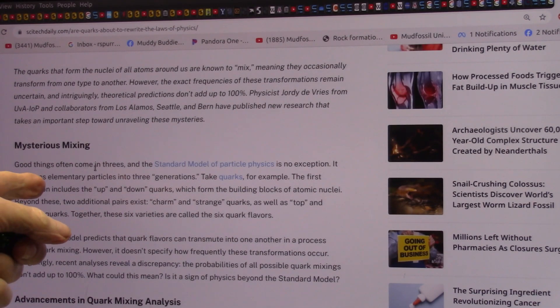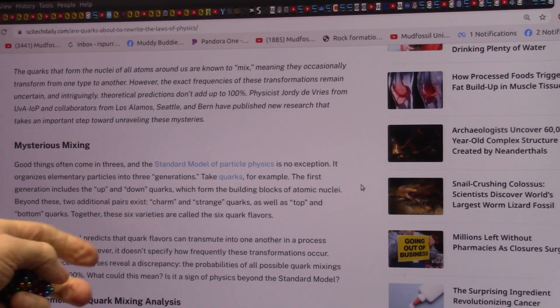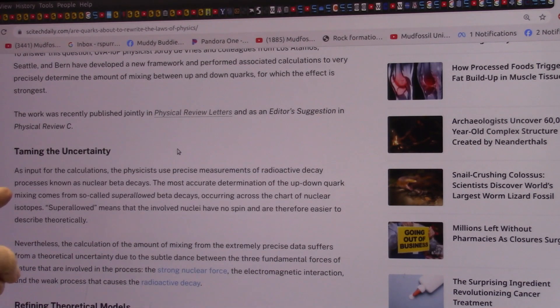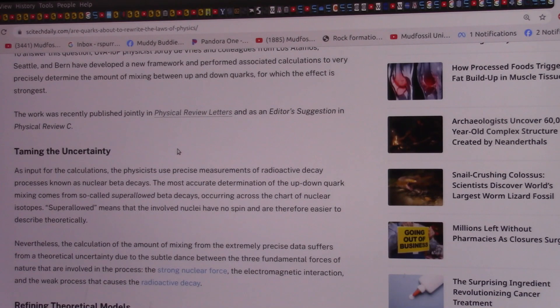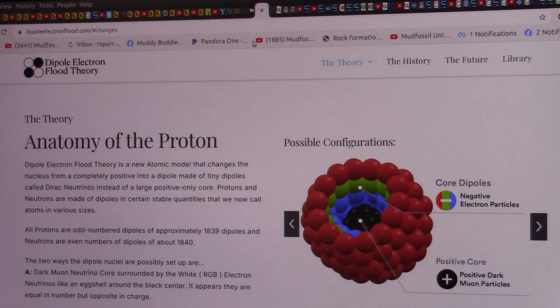All right, the good things often come in three standard model particles with no exception. Organizes element particles in three generations. No, no, no, no. Totally wrong. Charm, strange, top, bottom. You can know these crazy names. All it is is two little particles. Let's start talking, taming the uncertainty. As input for the calculations, the physicists use precise measurements of radioactive decay processes known as nuclear beta decays. The most accurate determination of up-down quark mixing. Up-down quark mixing comes from so-called super-allowed beta decays occurring across the chart of nuclear isotopes. Super-allowed means that the involved nuclear have no spin and therefore easier to describe theoretically. There's no such thing. This is totally, totally wrong. This is what's totally correct. And I can, I'm showing it. They can show all they want. I can show the particles.